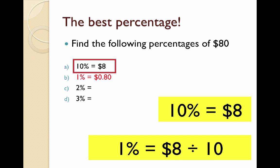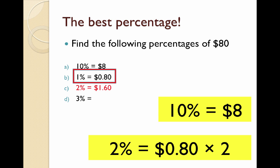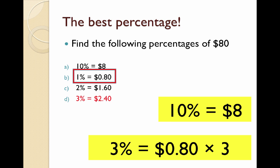That's important because now I can find 2% just by doubling it, or multiplying by 2. So 2 lots of 80 cents is $1.60. Similarly, for 3%, 3 lots of 80 cents gives me $2.40.